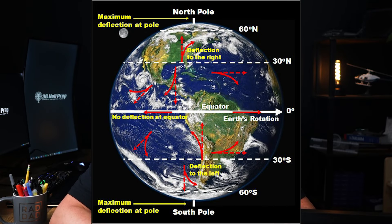The Coriolis force is an effect caused by the Earth's rotation. As the Earth spins, it causes moving air and water to curve rather than traveling in a straight line. This curving effect is what we call Coriolis force.